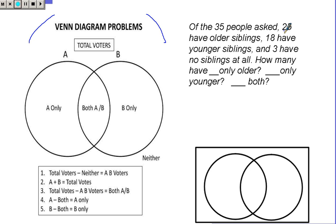Of the 35 people asked, 25 have older siblings, 18 have younger siblings, and 3 have no siblings at all. How many have only older siblings, only younger, and both?